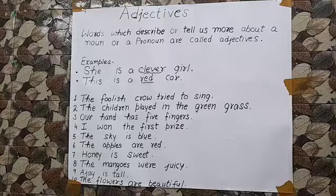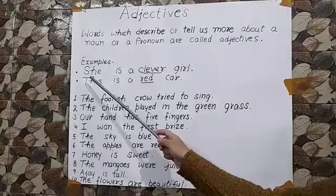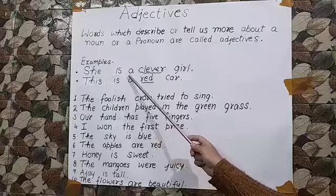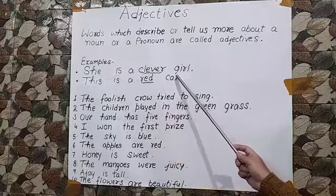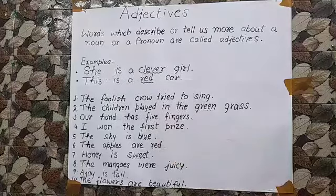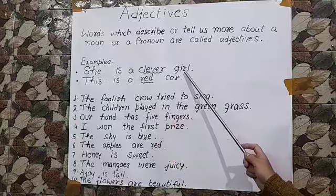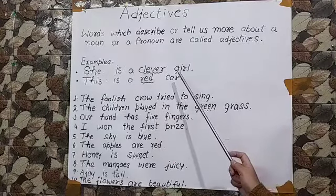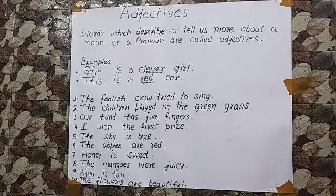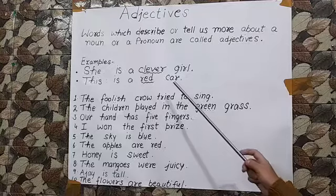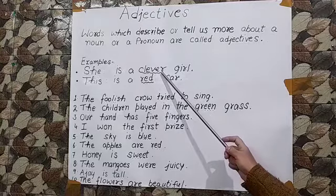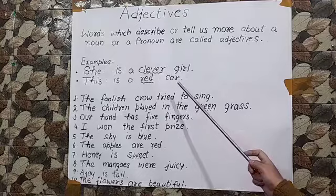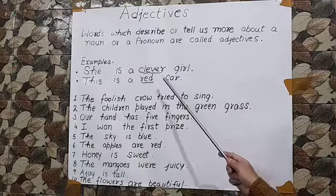So let us see some examples. She is a clever girl. Now children, girl is a noun in this sentence and what is being described about the girl? That she is clever. So clever is an adjective in this sentence.